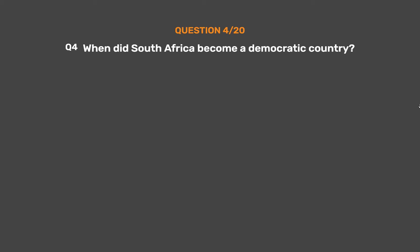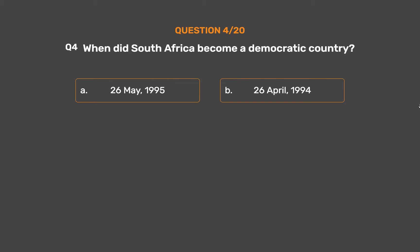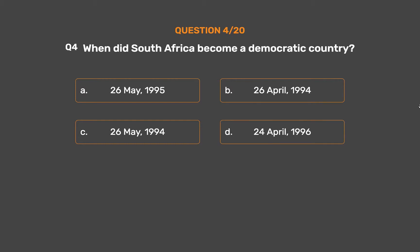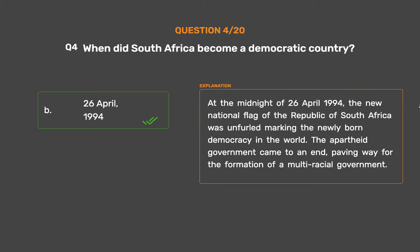Question 4: When did South Africa become a democratic country? Option A: 26th of May 1995. Option B: 26th of April 1994. Option C: 26th of May 1994. Option D: 24th of April 1996. The correct answer is Option B: 26th of April 1994. At the midnight of 26th of April 1994, the new national flag of the Republic of South Africa was unfurled, marking the newly born democracy in the world. The apartheid government came to an end, paving way for the formation of a multiracial government.